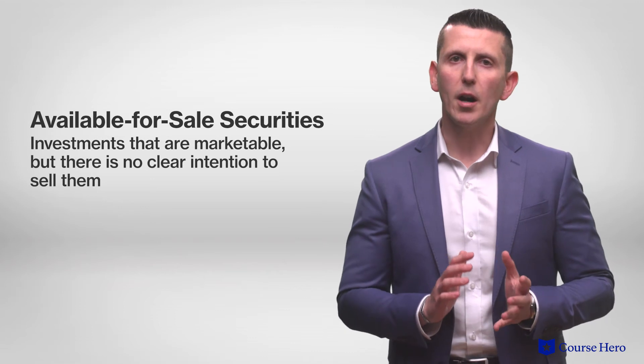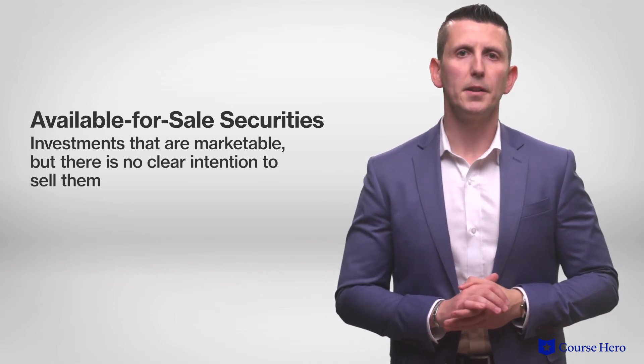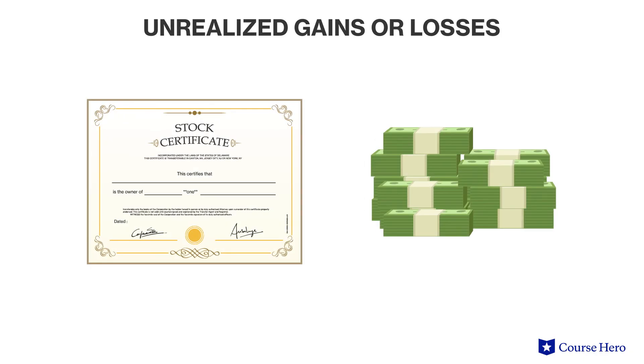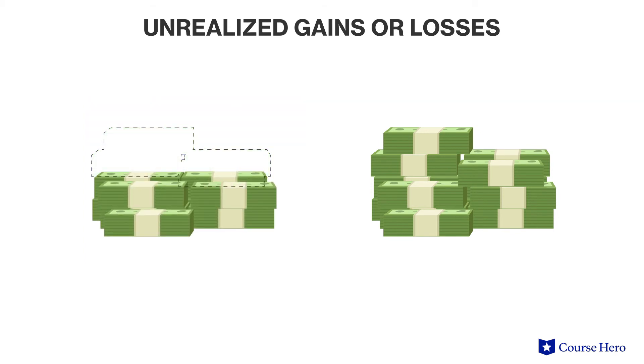If an investment is neither a trading security nor a held-to-maturity security, it is considered an available-for-sale security. Available-for-sale securities are investments that are marketable and could be sold, but there is not a clear intention to sell them. The fluctuations in value are captured as unrealized gains or losses on the income statement as other comprehensive income. Once the asset is actually sold, the actual gain or loss is recognized and any unrealized gain or loss is removed.